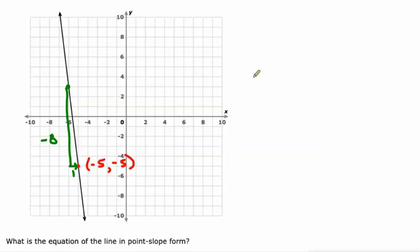So our equation then, y minus negative 5, also known as y plus 5, equals negative 8 times x minus negative 5, also known as x plus 5. And we're done.